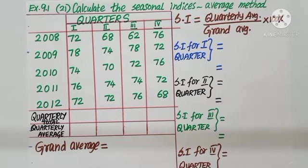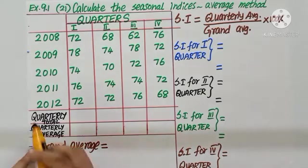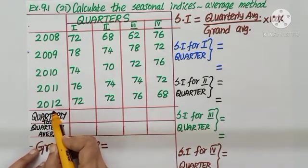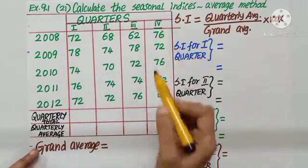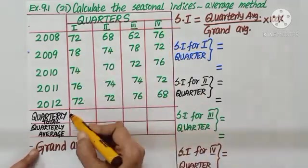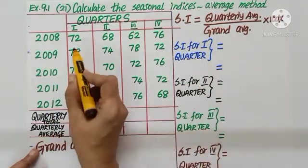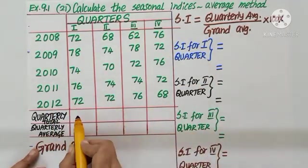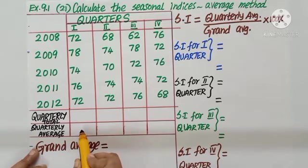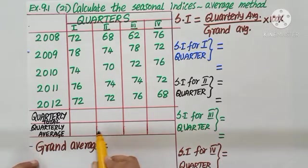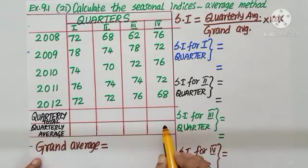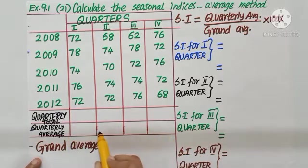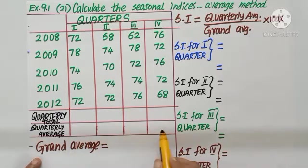Exercise 9.1, question number 21. Here again, we are given 5 years and 4 quarters. Find the total of each quarter. There are 5 values given. So, each total divided by 5. You get quarterly average. Then, add all the average, divide by 4 to get the grand average.